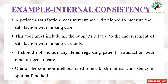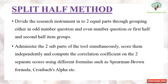One of the most common methods used to establish internal consistency is the split-half method. Divide the research instrument into two equal parts by grouping either into odd-numbered questions or even-numbered questions, or first half and second half. Then administer the two sub-parts of the tool simultaneously, score them independently, and compute the correlation coefficient on the two scores using different formulas such as the Spearman-Brown formula or Cronbach's alpha.